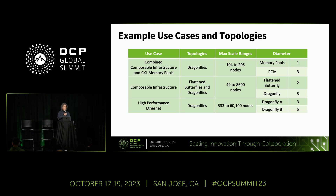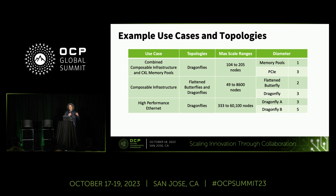Looking at examples of how you can use this distributed switching technology and passive shuffles: for combined composability infrastructure and CXL memory pools, we have designs scaling from about 104 to 205 nodes with a very small diameter for memory accesses. For pure composable infrastructure — GPUs, TPUs, NVMe devices — we have designs from 49 to 8,000 nodes, enabling full data center composability with any device into any server across the data center. For high-performance Ethernet with Dragonflies, we have designs up to 60,000 nodes. This highly scalable technology leverages commodity optics in a unique way.